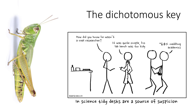Now we are going to get into the dichotomous key. The dichotomous key is a method that we use to identify organisms based on their physical unchanging characteristics. If you have used a dichotomous key before or you've seen it in another class, this is pretty straightforward. If you know how to use the dichotomous key, go ahead and skip to the next lesson — you can just jump right into figuring out how to ID your basic specimens.